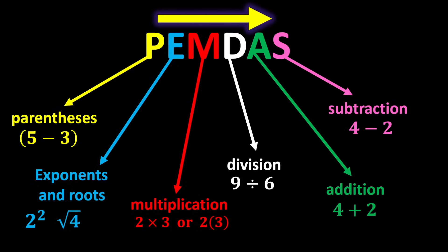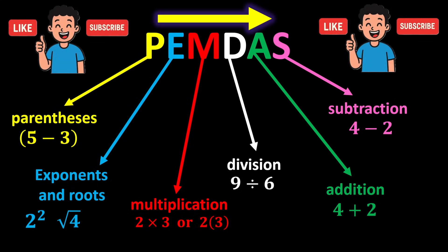Multiplication and division have equal priority, so whenever both appear in an expression, move from left to right and perform whichever you reach first. This rule also applies to addition and subtraction. To better understand PEMDAS, let's solve a challenging question.